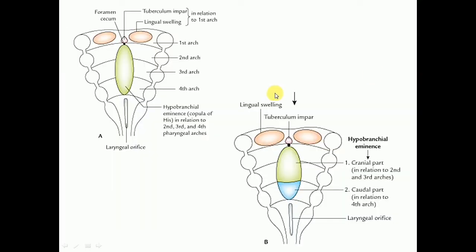The tongue develops in relation to the pharyngeal arches in the floor of the developing mouth. In this diagram we can see the first arch, second arch, third arch, and the fourth arch.